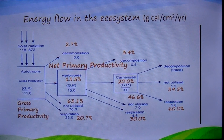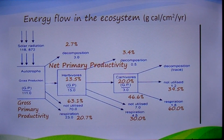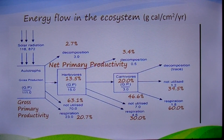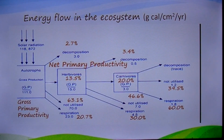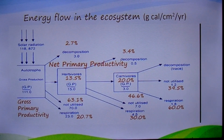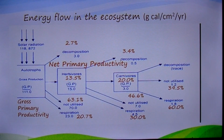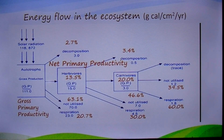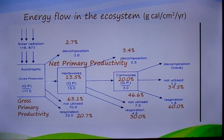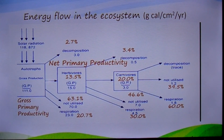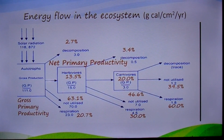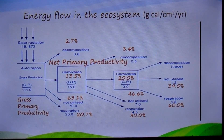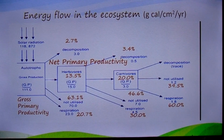This energy flow diagram explains the principle of food chains and the working of the two laws of thermodynamics. Of the 111 gram calories per centimeter squared per year of light energy fixed by the plants, only 13.5 percent is available to herbivores. The remaining 80.5 percent is not utilized at all and is lost through decomposition and respiration.